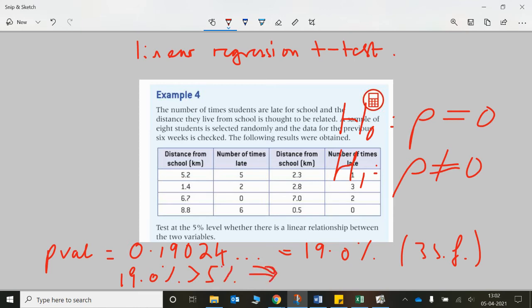So we will say 19% is greater than 5%. Therefore, this implies that rho is equal to zero, or rather implies that reject the H1, rejects the fact that there is correlation.